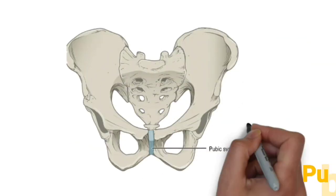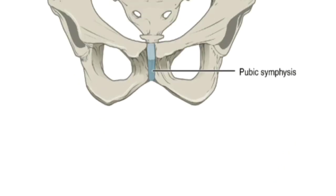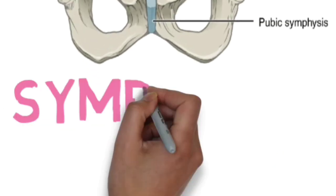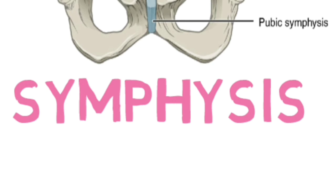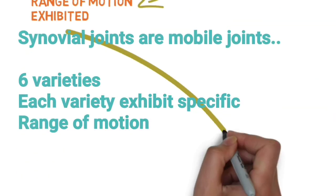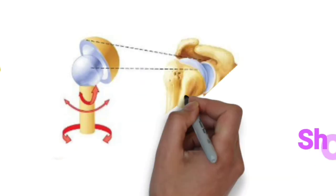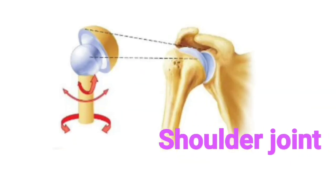Pubic symphysis is an example of a symphysis joint. The synovial joint is highly mobile, has six varieties, and exhibits a greater range of motion. The shoulder joint is an example of the ball and socket variety.